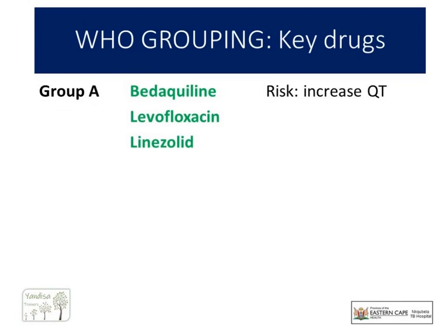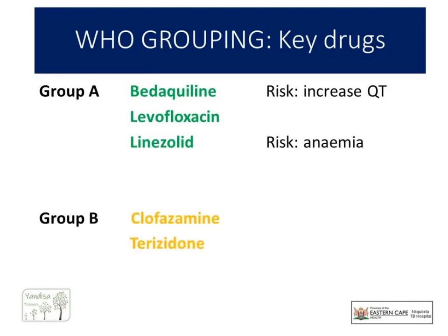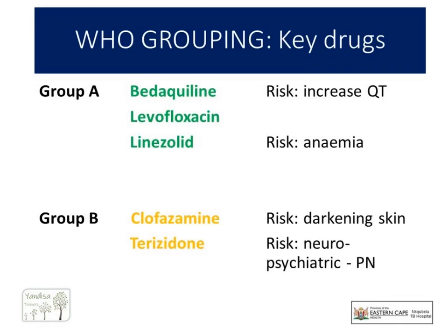Once Bedaquiline is completed, Moxifloxacin may be used instead. Linezolid makes up the third key Group A drug. Unfortunately there is a risk of bone marrow suppression with possible anemia or neutropenia, especially early in TB treatment when patients are already suppressed due to the TB disease. Next are our Group B drugs — these are our Toyotas, solid and reliable and added where possible. Clofazimine, relatively new in our regimens, has the unfortunate side effect of sometimes causing an orange hue in light-skinned patients and darkening of African skin. It does eventually wash out but can be unpleasant for patients. Terizodone has been around for quite some time and is known for its neuro and psychiatric side effects, most notably peripheral neuropathy.